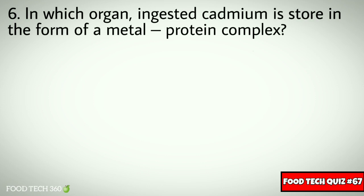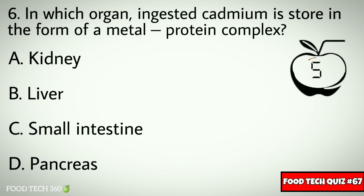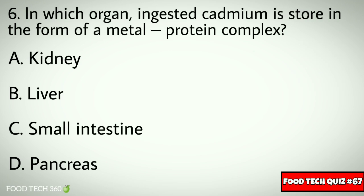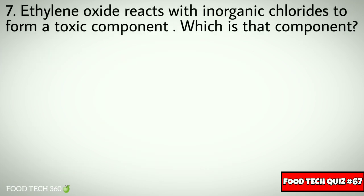Question number six: in which organ is ingested cadmium stored in the form of a metal-protein complex? Options: A) kidney, B) liver, C) small intestine, D) pancreas. Correct answer: A) kidney.